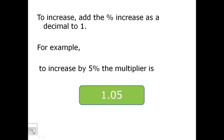We would add the percent increase to 1. So for example, 5% sales tax. The multiplier, what we multiply by, is 1.05. We're paying 100% for the item plus 5% tax.